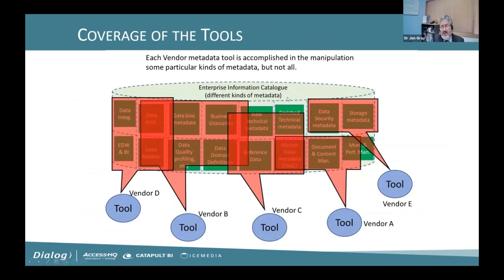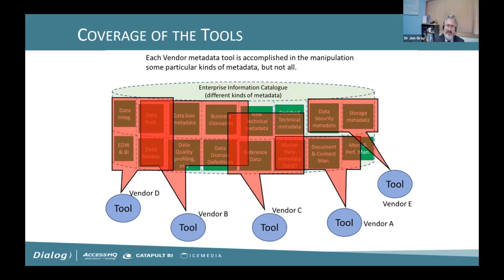For most businesses, you probably don't want business users going directly to the raw metadata tool. You need some sort of intermediary piece of software — a web interface of some kind — to expose the right information in the right way to those business users. That's what we call business-facing data services. Each vendor has different strengths and weaknesses in terms of the specific kinds of metadata they cover, and you need to understand how that maps onto different vendors' products.